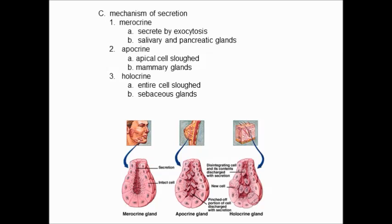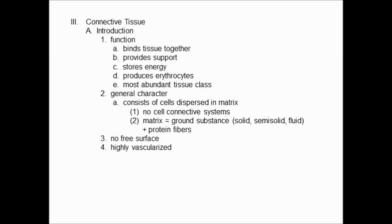That is all we are going to say about epithelial tissue. The next group is connective tissue, and the general introduction material for connective tissue is almost as large as that for epithelial. The main reason is that connective tissue is such a broad class of tissues. Before we talk about how broad the tissues are in this family, we can look at some general functions and general characteristics of connective tissue.